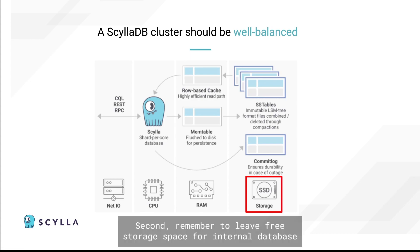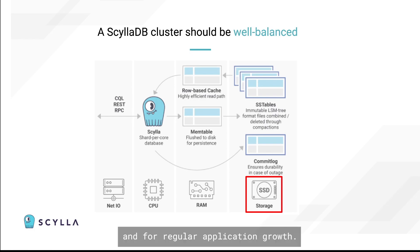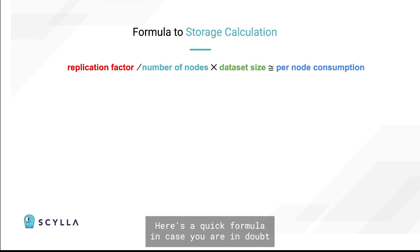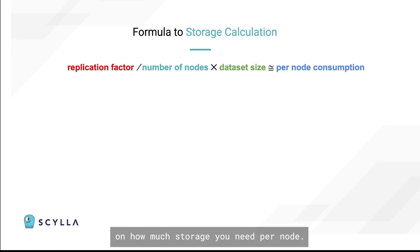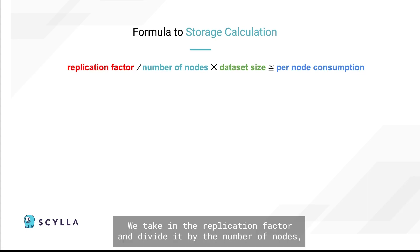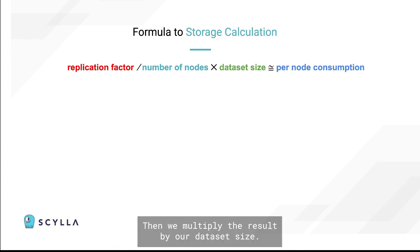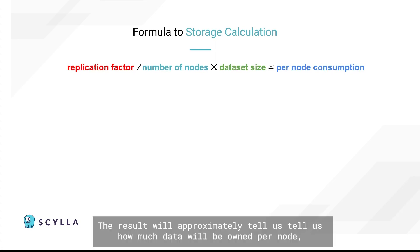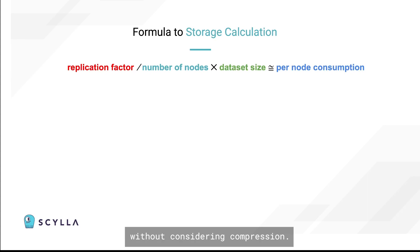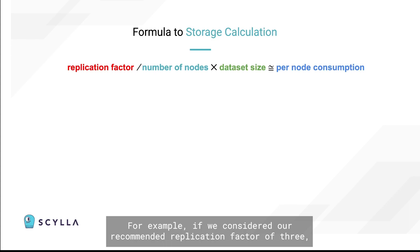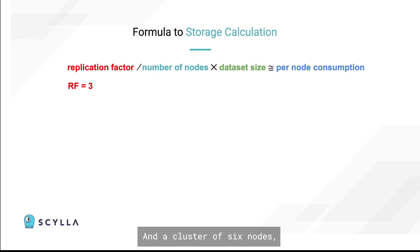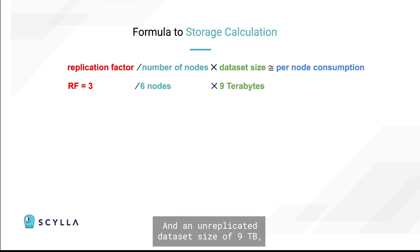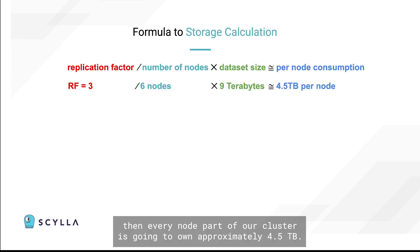Second, remember to leave free storage space for internal database operations, such as compaction, backups, repairs, and for regular application growth. Here's a quick formula in case you are in doubt on how much storage you need per node: take the replication factor and divide it by the number of nodes, then multiply the result by your dataset size. The result will approximately tell you how much data will be owned per node, without considering compression. For example, with a replication factor of 3, a cluster of 6 nodes, and an unreplicated dataset size of 9 terabytes, every node will own approximately 4.5 terabytes.